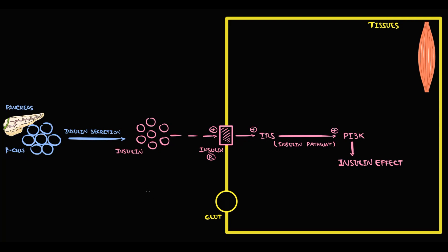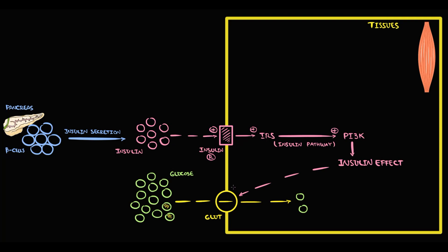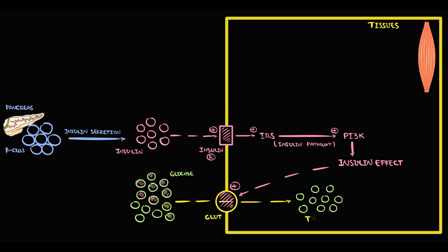Tissues have GLUT transporters, and glucose in the blood serves as fuel for tissues. The GLUT transporter provides transportation of glucose from blood into tissues, but the GLUT transporter by itself is very slow. Without insulin, the transporter might deliver only two glucose molecules into the tissues, but with insulin stimulation, the GLUT transporter can deliver an additional seven glucose molecules — so insulin effect determines the total amount of glucose entering the tissues.